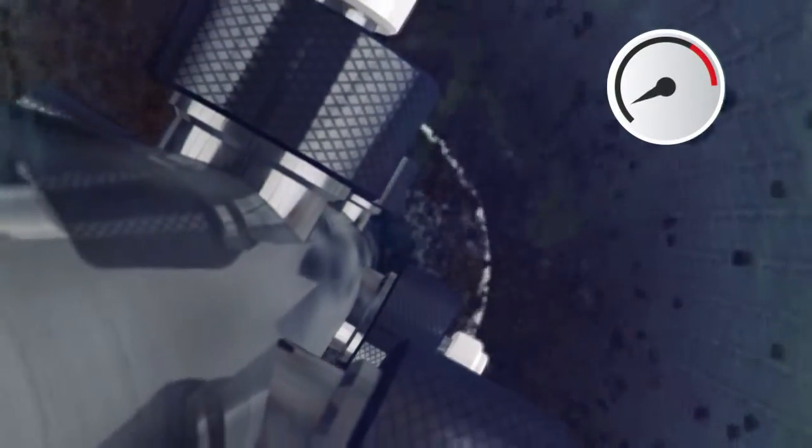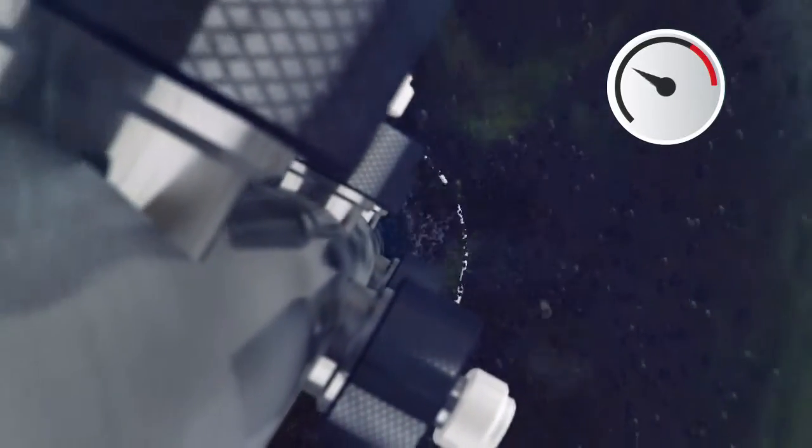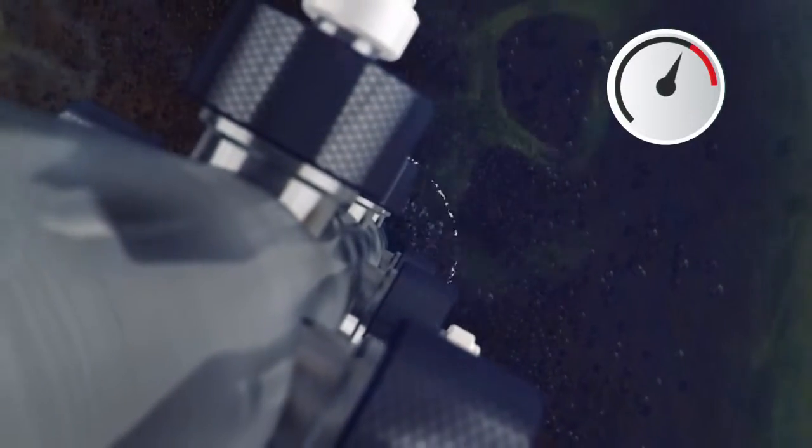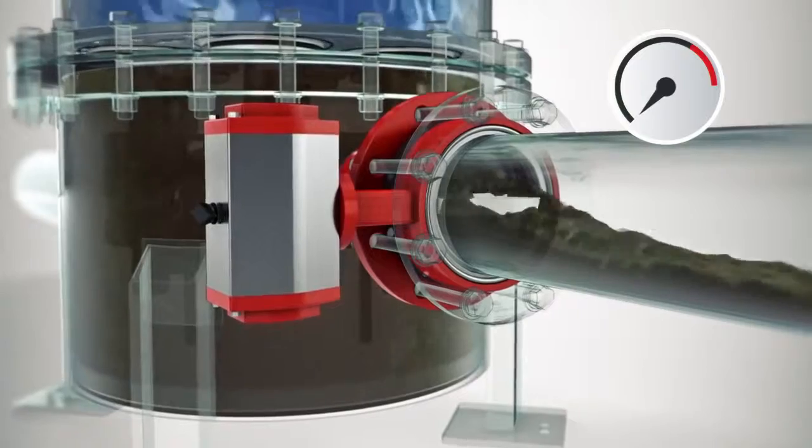suspended solid particles are trapped and accumulate on each screen's inner surface. Once the differential pressure reaches a preset level, the system activates its self-cleaning cycle by opening the flushing valve and starting the motor.